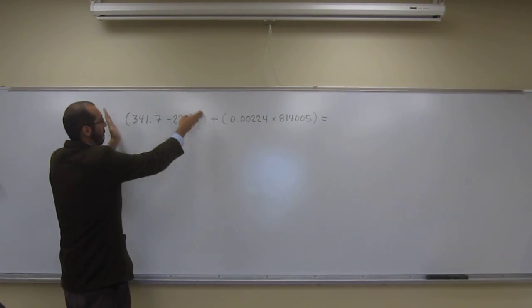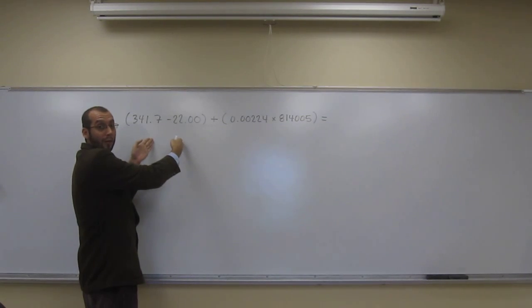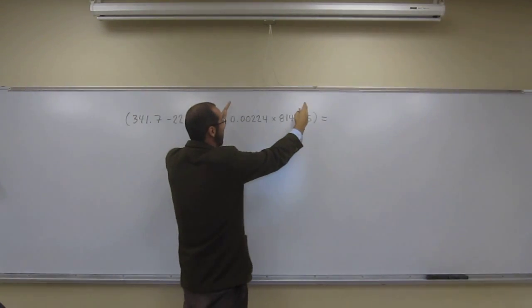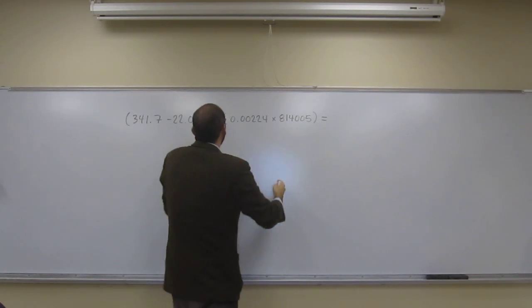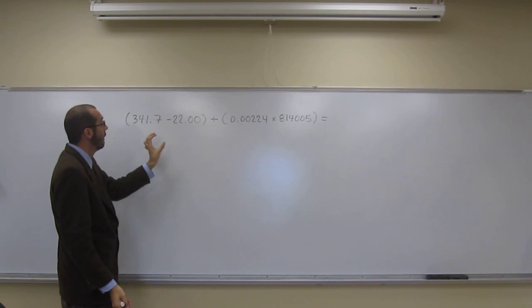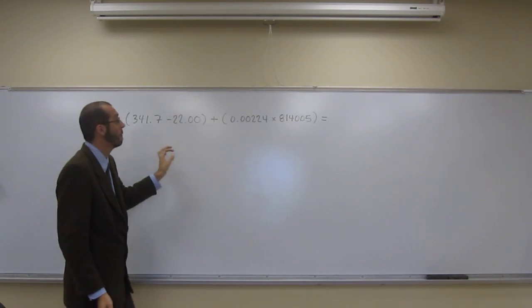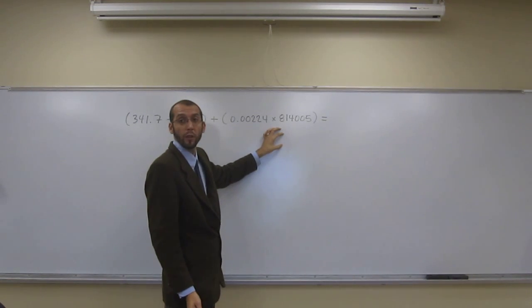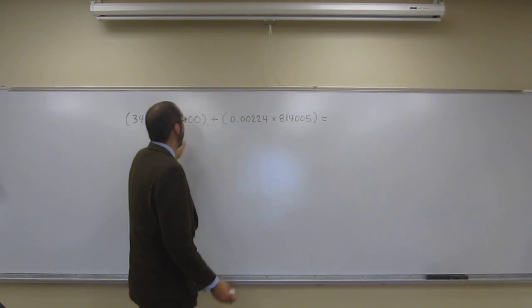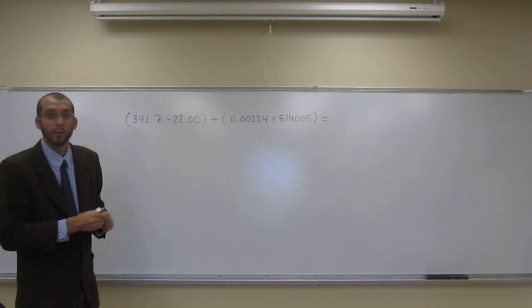Whenever you're doing these problems, it wants you to do them in the correct order of operation. With this parenthesis, you gotta do what's in that parenthesis first. Then you do what's within this parenthesis. And then you're gonna add those two numbers together. So you're gonna have to do the significant figure rules for addition, subtraction here, significant figure rules for multiplication and division here, and then when we combine those two numbers, addition and subtraction significant figure rules.